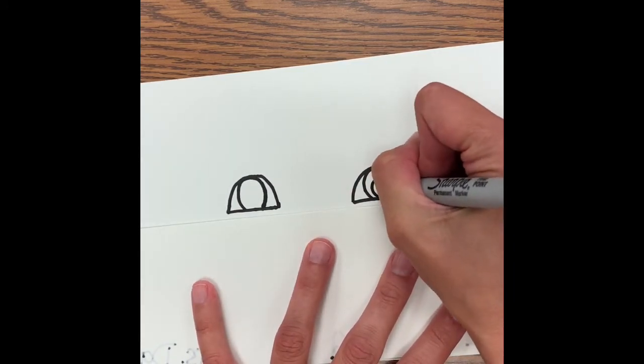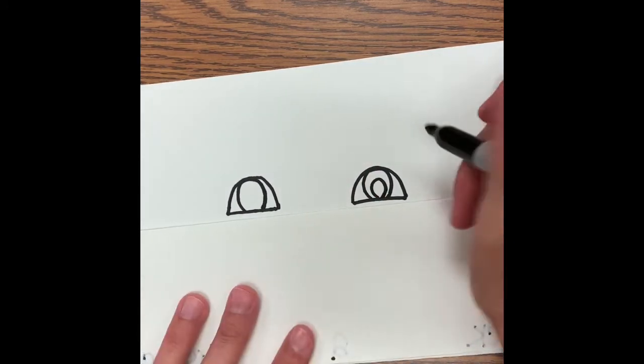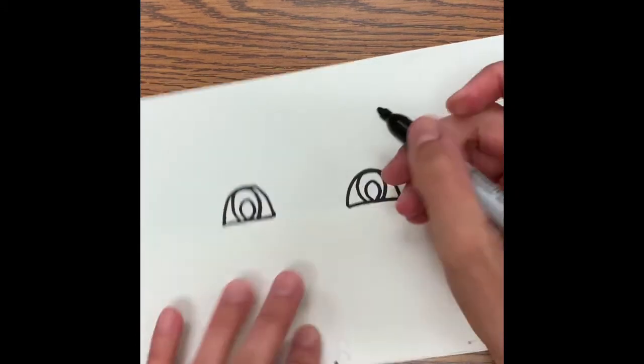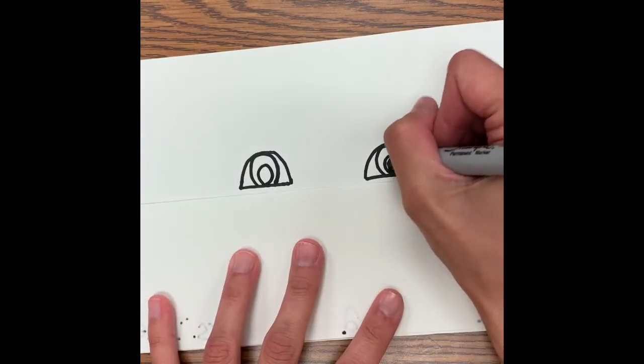And then I'm going to do a smaller circle and that's going to be the pupil, which is the black part of your eye. I'm going to go ahead and color my pupil in.